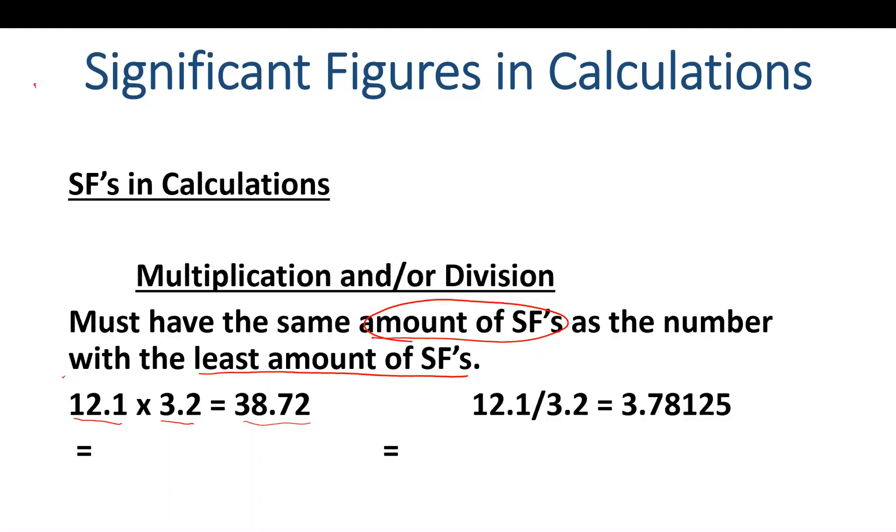we have 12.1, which has three sig figs, and 3.2, which has two sig figs. It doesn't make sense that we'd have more certainty in this calculation—where there's roundoff error and things like that compounded—with a final answer of four sig figs. That makes no sense.